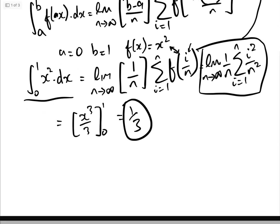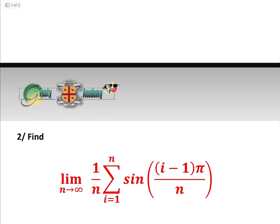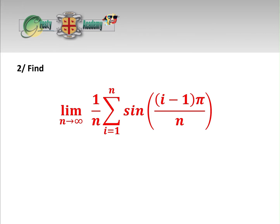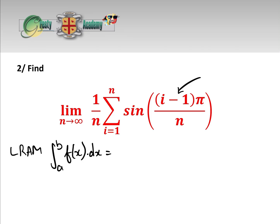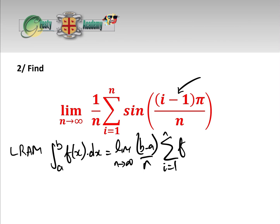Let's do more examples. Example 2: the limit as n approaches infinity of (1/n) times the sum from i=1 to n of sin((i minus 1)π/n). The i minus 1 means we use the left rectangle approximation method. That formula is: the integral from a to b of f(x) dx equals the limit as n approaches infinity of (b minus a)/n times the sum from i=1 to n of f(a plus (b minus a)(i minus 1)/n).